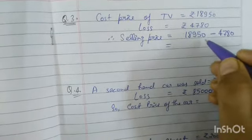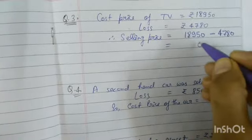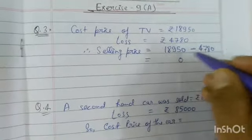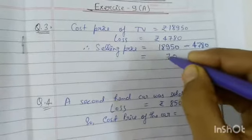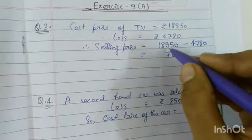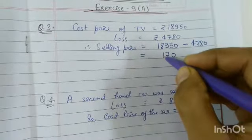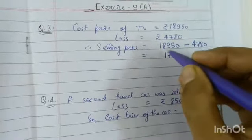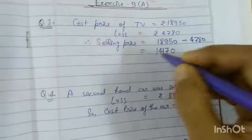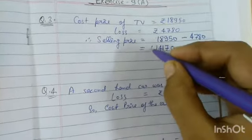Working through the subtraction: 10 minus 8 is 0, then 15 minus 8 is 7, then 8 minus 7 is 1, and 8 minus 4 is 4. The answer is 14,170 rupees.